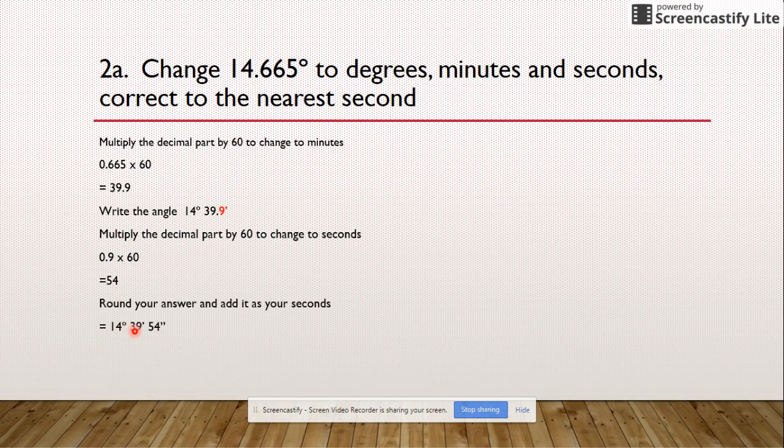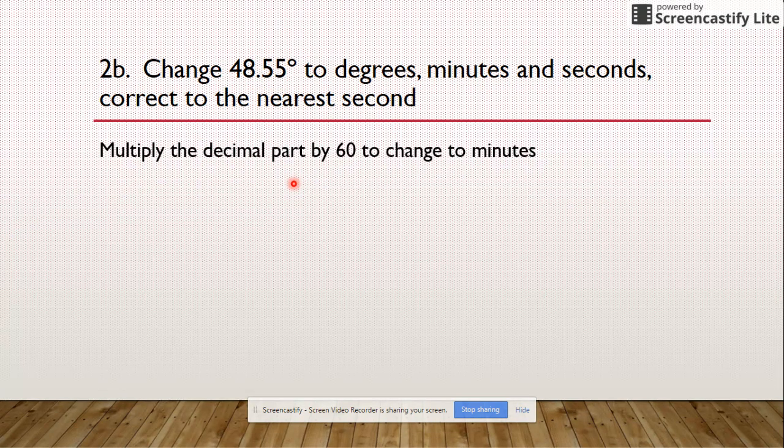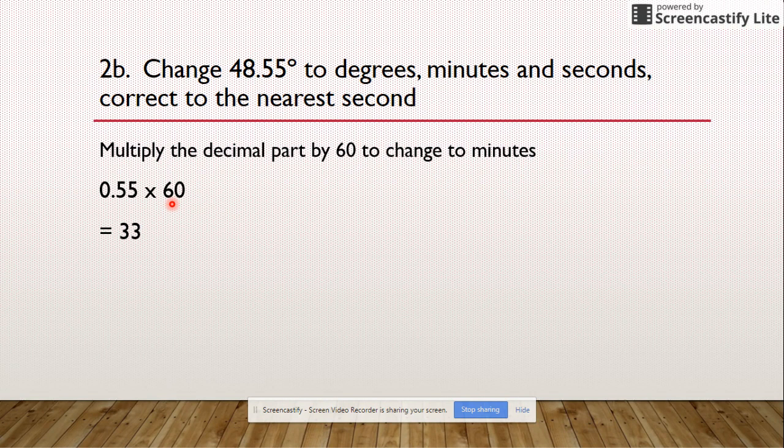Let's start another. 2b: change 48.55. So multiply the decimal part by 60, so that's 0.55 times 60, and you get 33. There's no decimal part on there, so what happens then is your answer will be 48 degrees, 33 minutes, and 0 seconds.